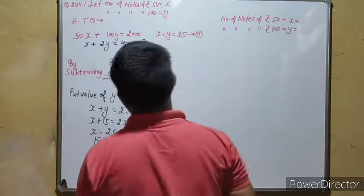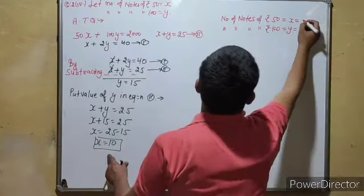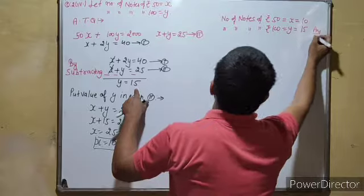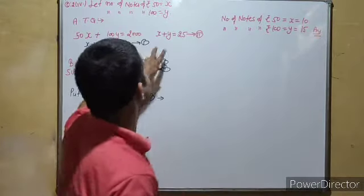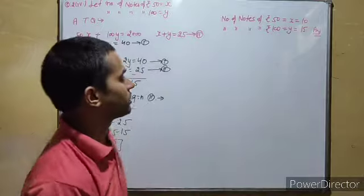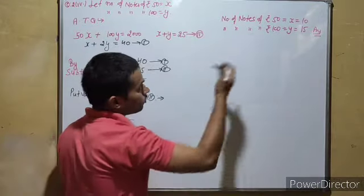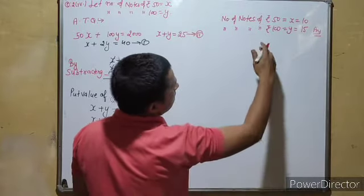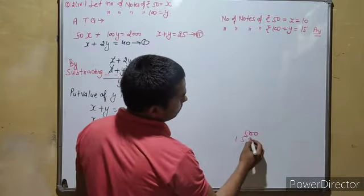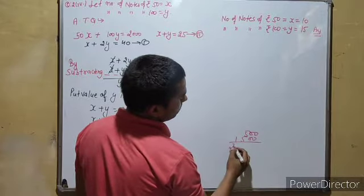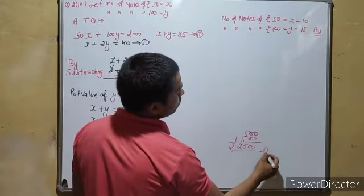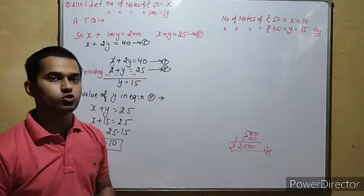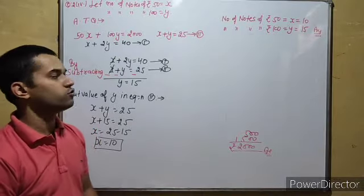So Rs. 50 notes are 10 and Rs. 100 notes are 15. For verification, 50 into 10 is 500, and 100 into 15 is 1500. The total amount is 2000. So this condition is satisfied with the total rupees, and the total notes are 25.